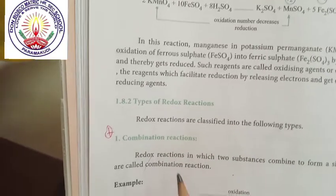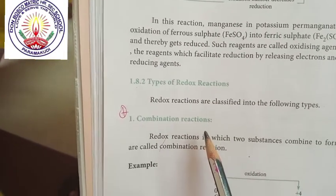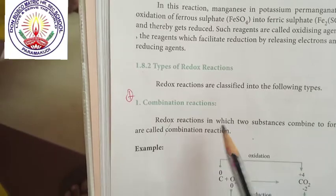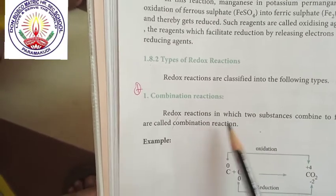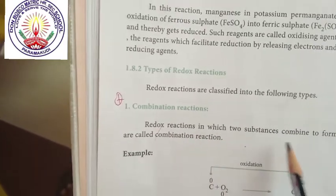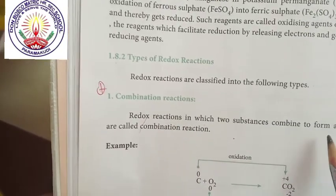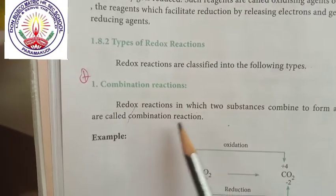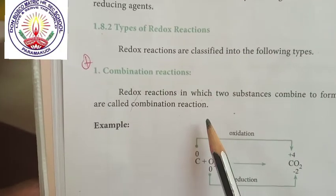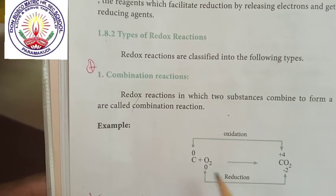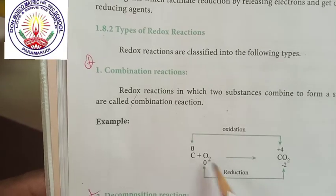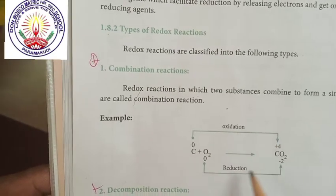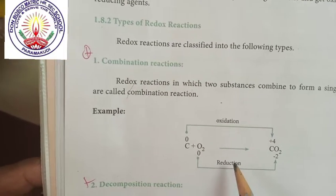First of all is combination reactions, where two elements are combined to form a product. Redox reactions in which two substances combine to form a single compound are called combination reactions. For example, carbon and oxygen combine to form carbon dioxide — the first one is oxidation and the second one is reduction.